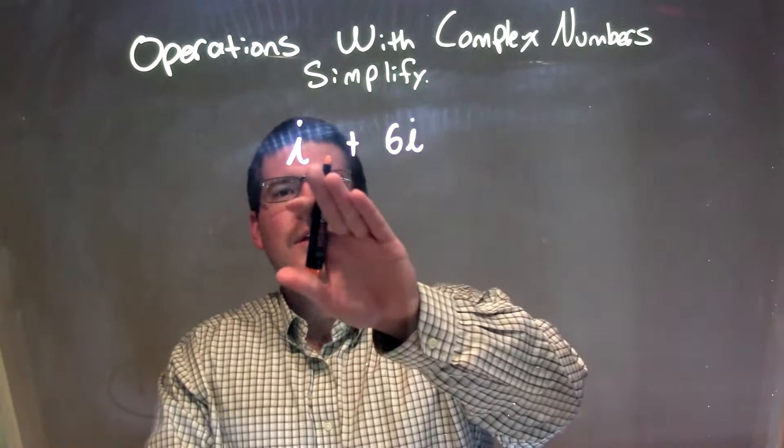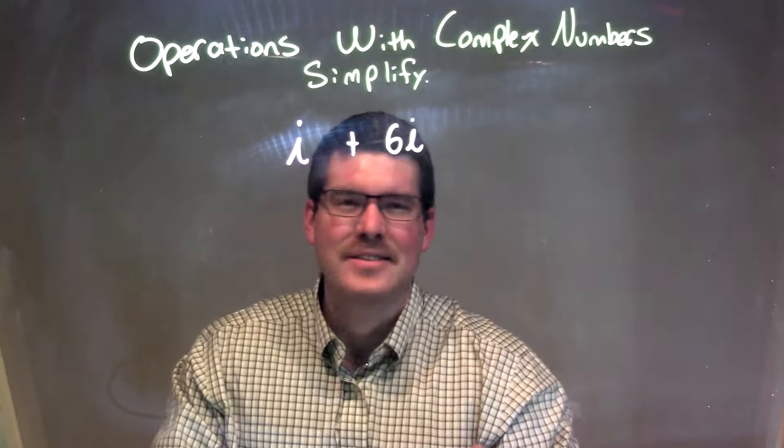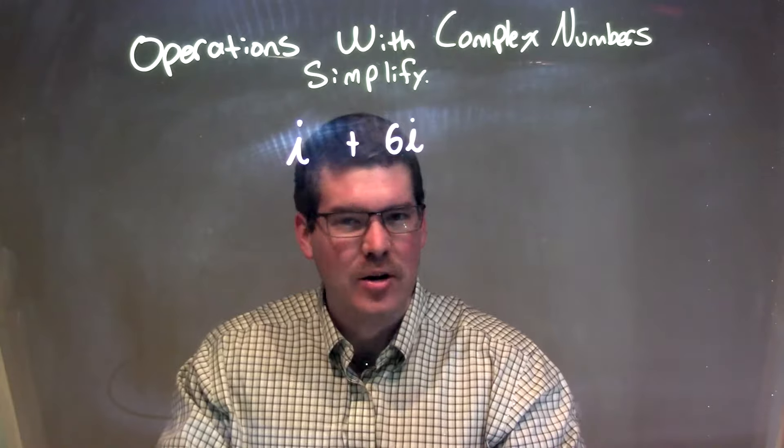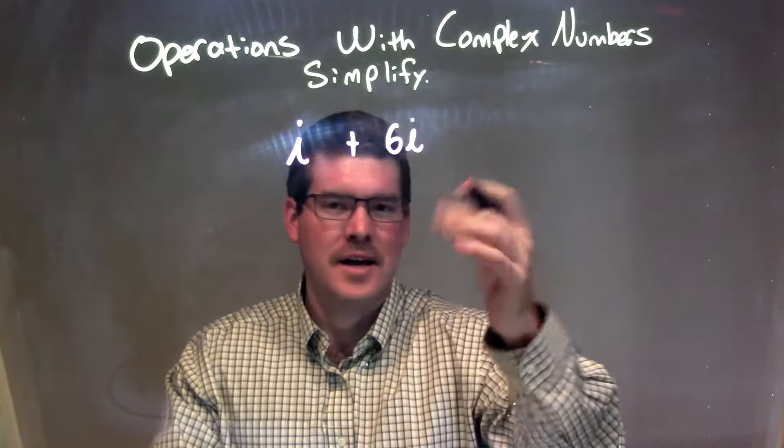Well, since we have an i, and i being imaginary, i and 6i together, they can act similarly to, like, if it was just a variable. So, i plus 6i, well, if we have 1i, and 6i's, we have 7i's.